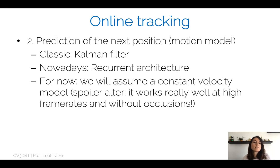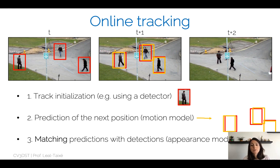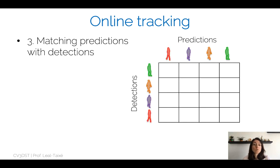Building a motion model for the prediction step is classically done using a Kalman filter, though nowadays many people use recurrent architectures to learn the motion model in a data-driven way. For now, we assume a constant velocity model. At high frame rates where the object moves only a little between frames and there are no occlusions, this assumption works very well. Once we have predictions, we match them with detections using a similarity measure such as pixel distance, IoU, or an appearance model.